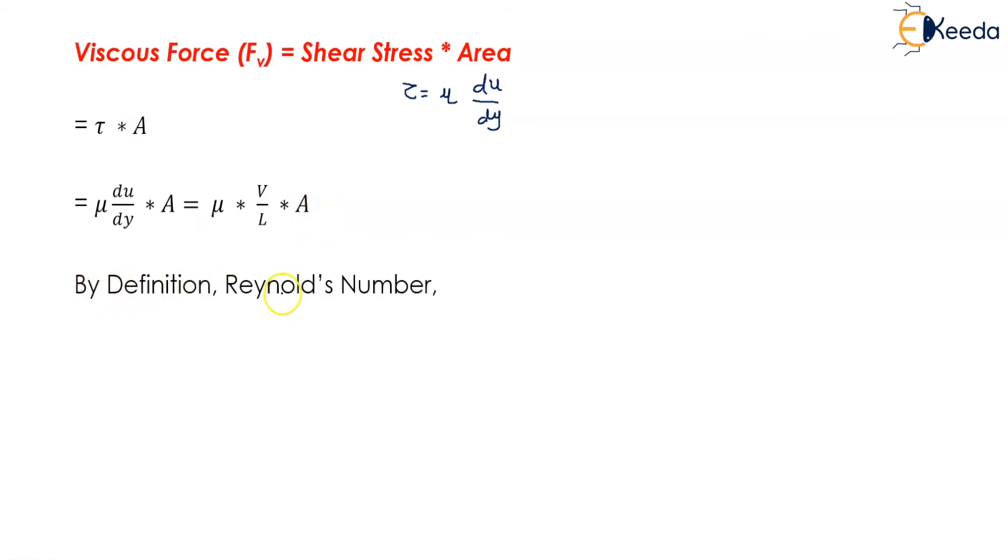By definition of Reynolds number, Re is the ratio of inertia force to the viscous force. Now this can be written as Fi upon Fv.